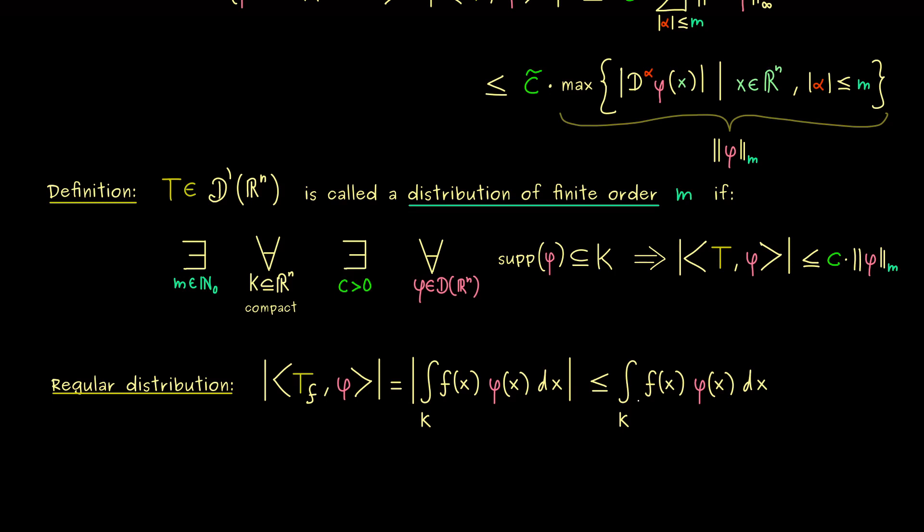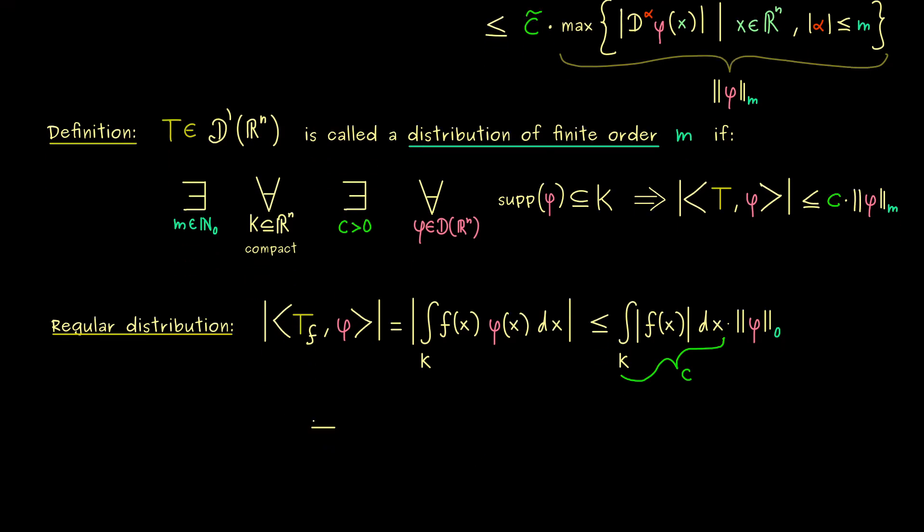Namely, we just push the absolute value inside the integral and then we pull out the supremum norm of φ. And please note the supremum norm of φ would correspond to an index m is equal to zero. In other words, here in front we have our constant c and we see we have a finite order distribution of order zero. Hence, all regular distributions are of order zero.